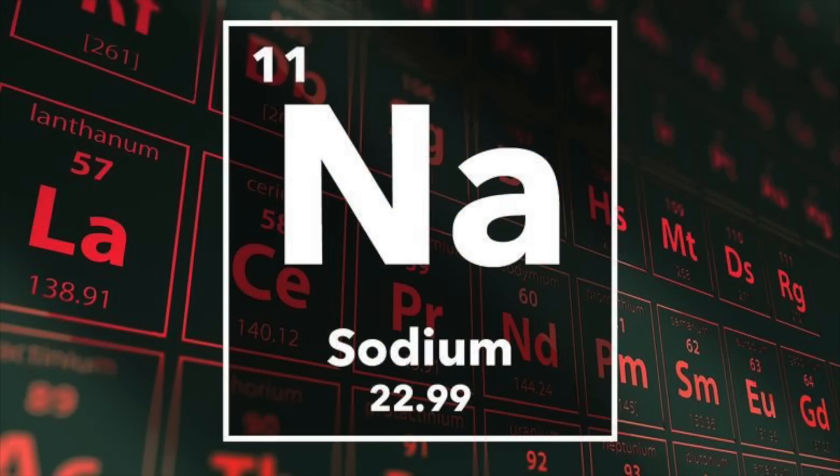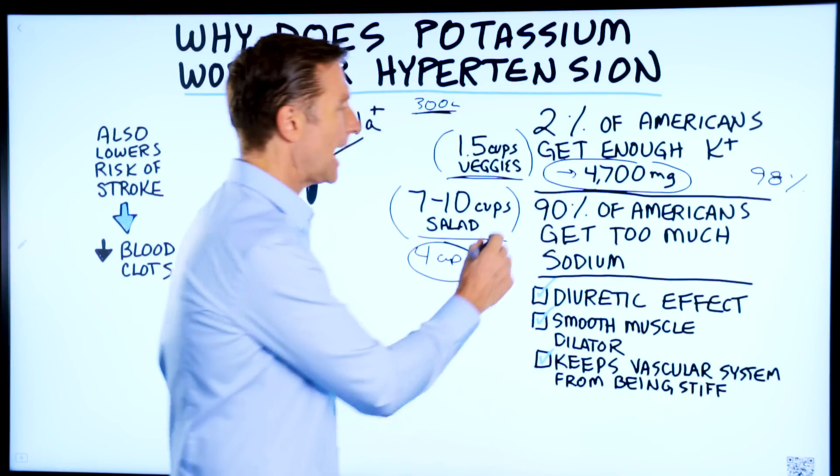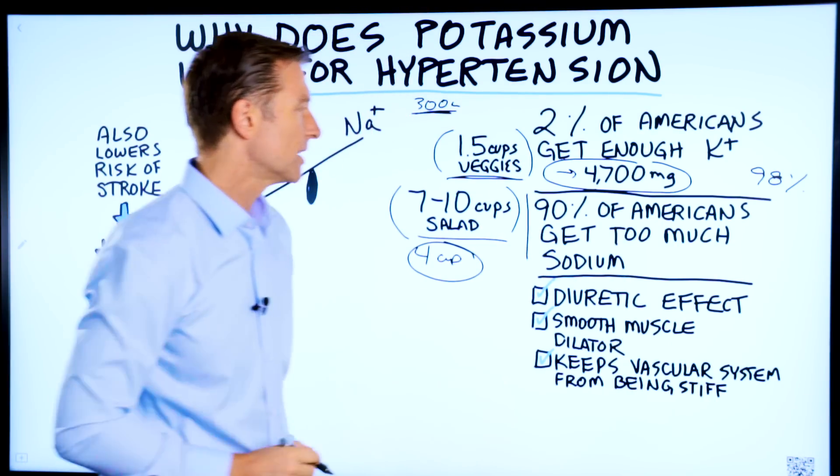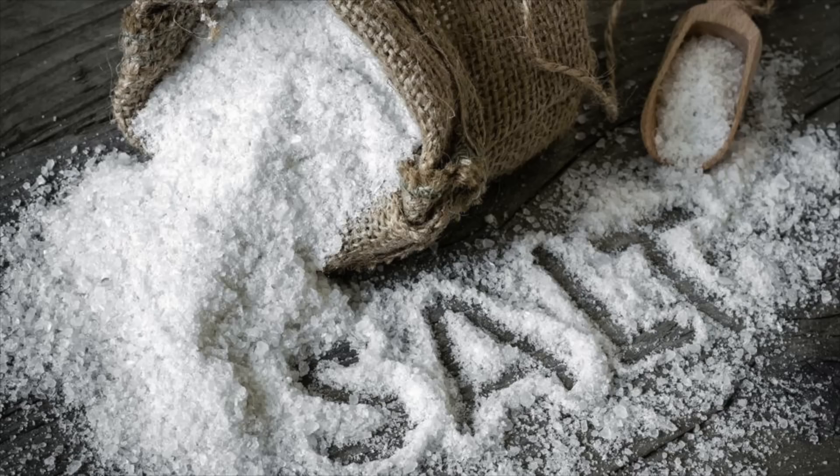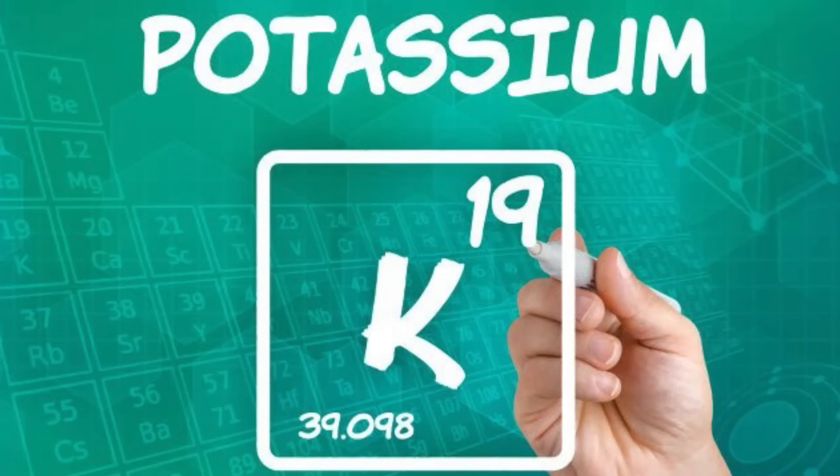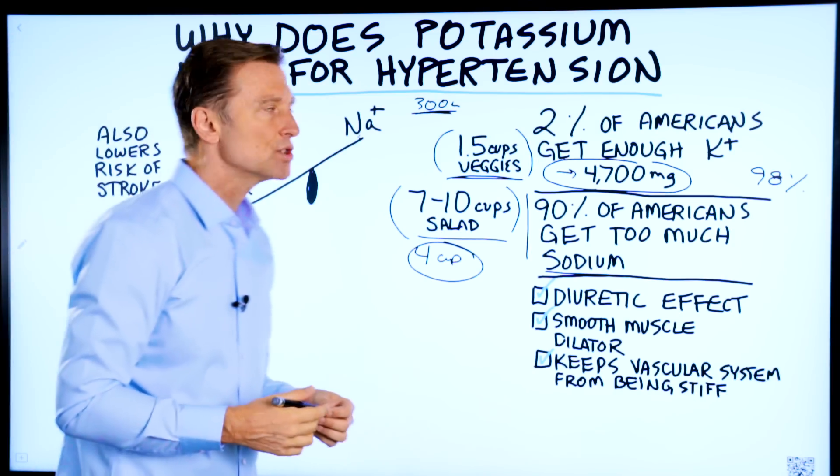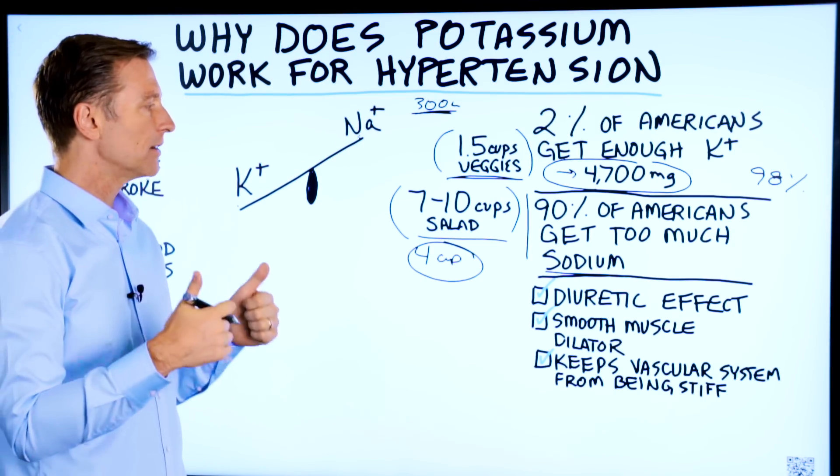If we take a look at sodium, the opposing mineral, 90% of Americans are consuming too much sodium. So we're really heavy on the sodium, very light on the potassium. And what this creates is a situation where your blood pressure is going to start going higher and higher.